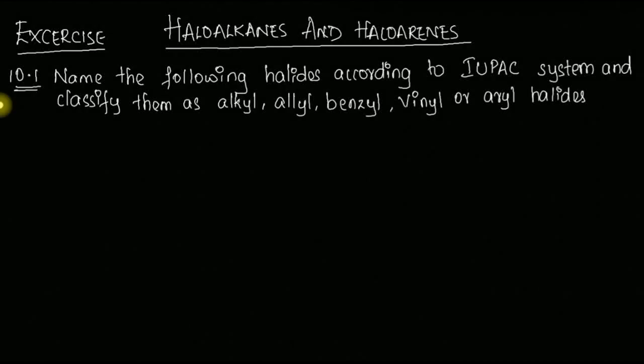This is question 10.1 from haloalkanes and haloarenes exercises. The question asks us to name the following halides according to the IUPAC system and classify them as alkyl, allyl, benzyl, vinyl, or aryl halides. So we are given a few molecules and need to first name them based on IUPAC rules and then identify which type of halide each belongs to.